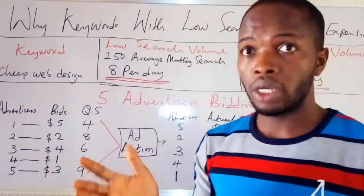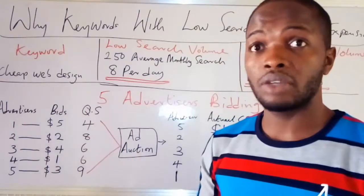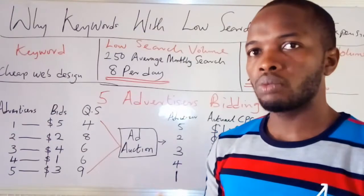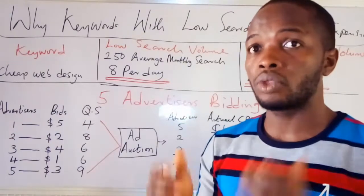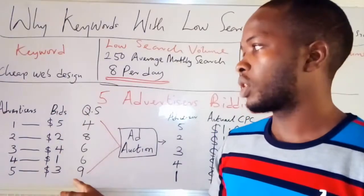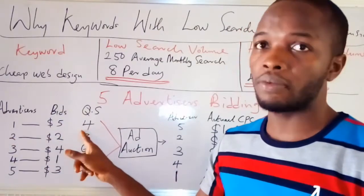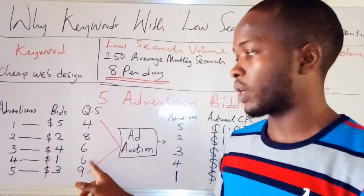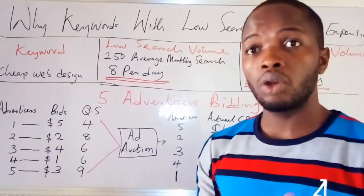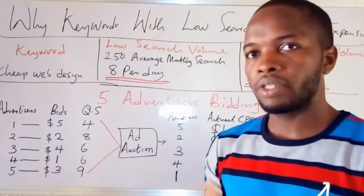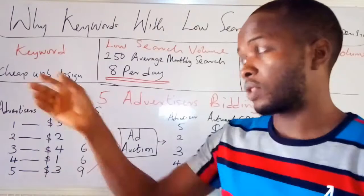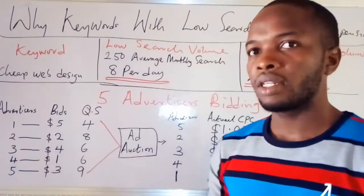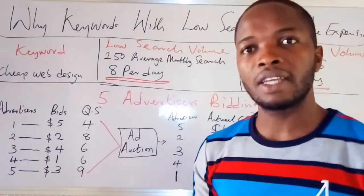Those are the bids — you don't know about the other advertisers, you only know about yourself. For you to enter into the auction, there are a lot of things Google takes into consideration. Let's assume Google is taking quality score as the major determinant of which advertiser wins the auction. The quality scores are: advertiser one has a quality score of 5, advertiser two has 8, advertiser three has 6, advertiser four has 6, and advertiser five has 9. All of them enter into the ad auction.